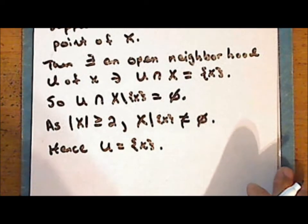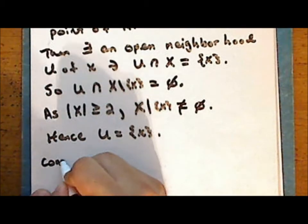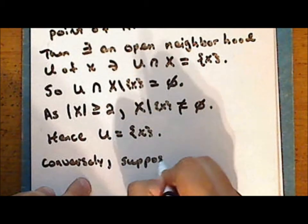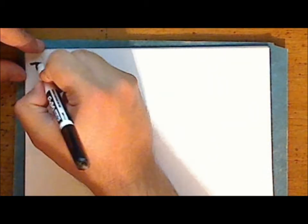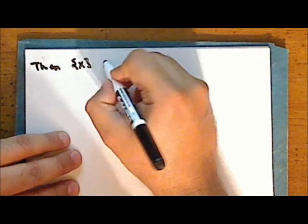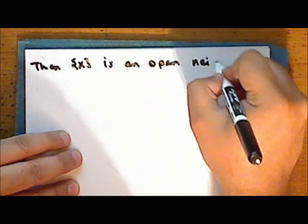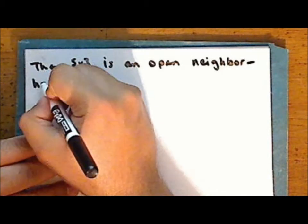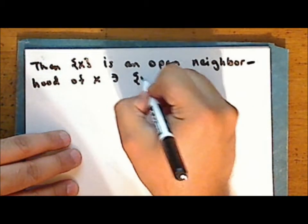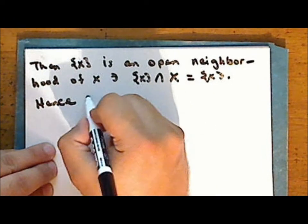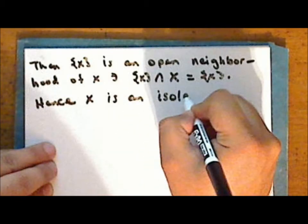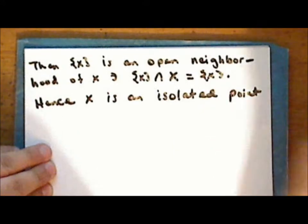Therefore, the singleton containing the point X is an open set. Conversely, suppose that the singleton containing the point X is open. Then the singleton containing the point X is an open neighborhood of the point X such that the intersection of this neighborhood with the space X is the singleton containing the point X. And hence the point X is an isolated point of the space X.